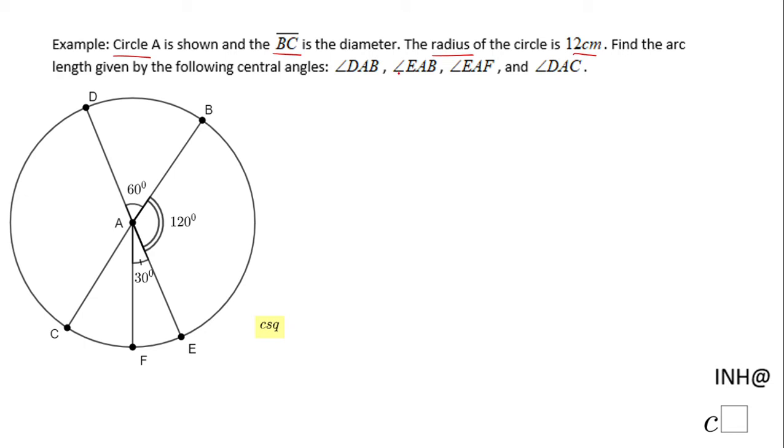We're finding the arc lengths of the arcs given by the central angles that you see here, and I'm going to start with angle AB, which is 60 degrees. So the question is: how much is this arc length?